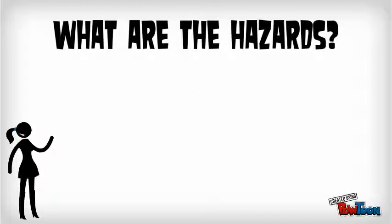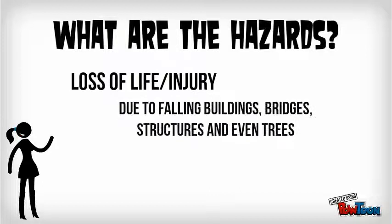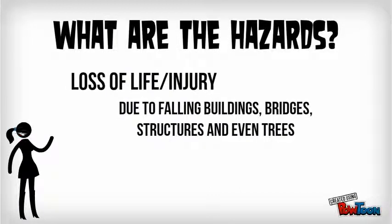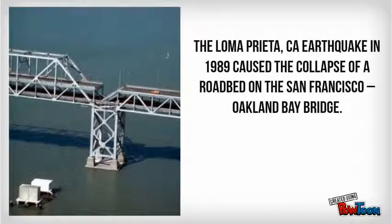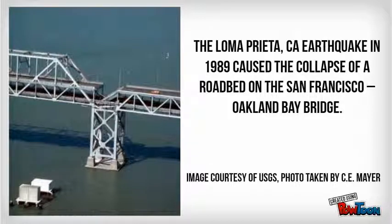With earthquakes, a primary concern is that they lead to a loss of life or injury when structures fall, such as buildings, bridges, or even trees. In this picture we see the collapse of a roadbed on the San Francisco-Oakland Bay Bridge during the 1989 Loma Prieta earthquake. People were traveling across this bridge at the time and it killed a number of people and smashed many cars.